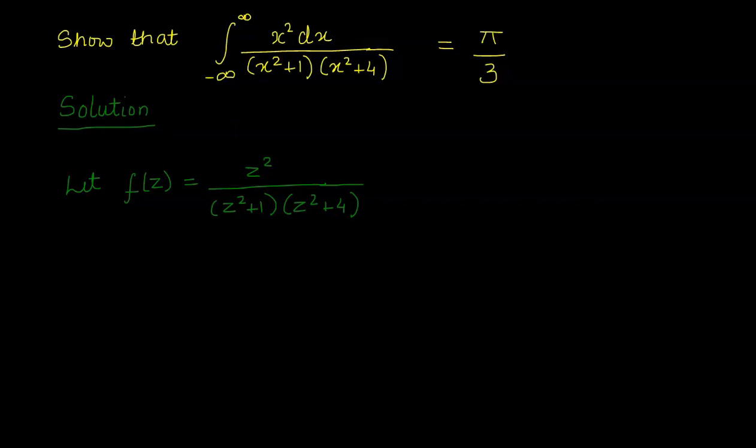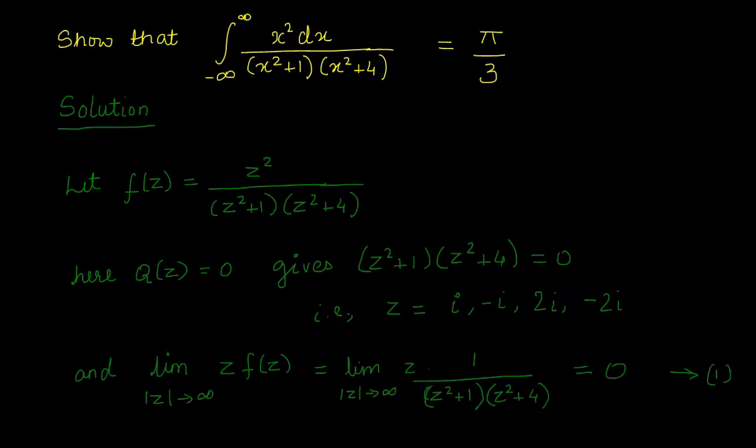Now we have to check 3 conditions. First, the degree of qz is 4, and degree of pz is 2. So degree of qz minus degree of pz equals 4 minus 2, which equals 2. The first condition is satisfied. Second condition: qz equal to 0 gives z squared plus 1 into z squared plus 4 equal to 0. This gives 4 values of z: i, minus i, and plus minus 2i. These are complex roots, not real roots. Third condition: as limit modulus z tends to infinity, z fz equals zero. All three conditions are satisfied.